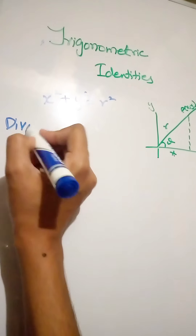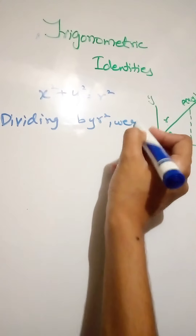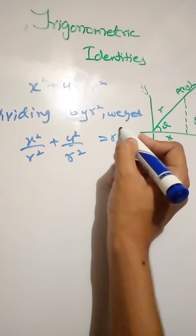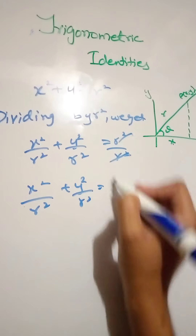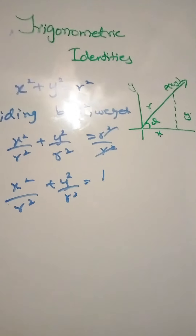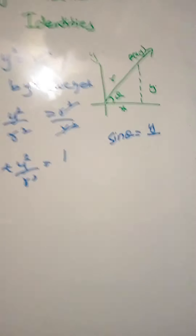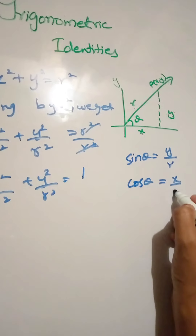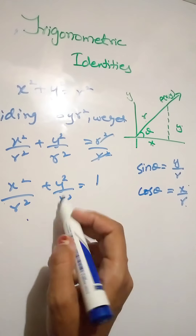Welcome everyone! We have x-squared by r-squared plus y-squared by r-squared equals r-squared by r-squared. So you can see here x by r and y by r.